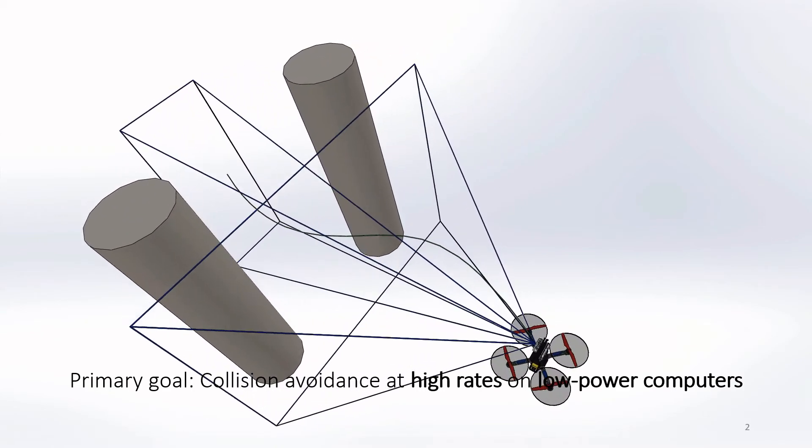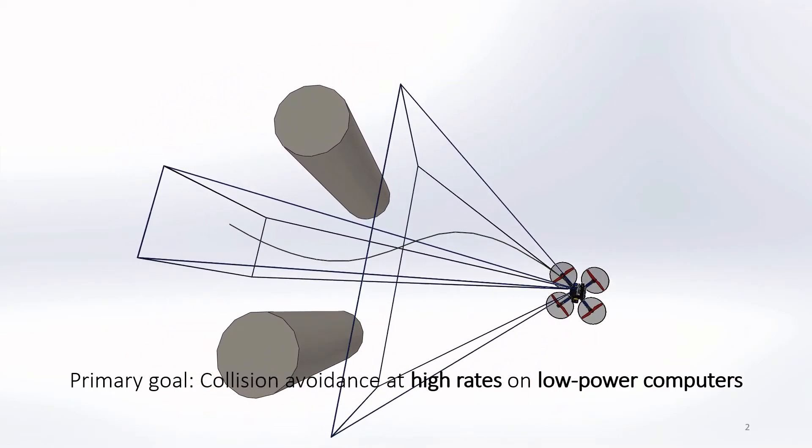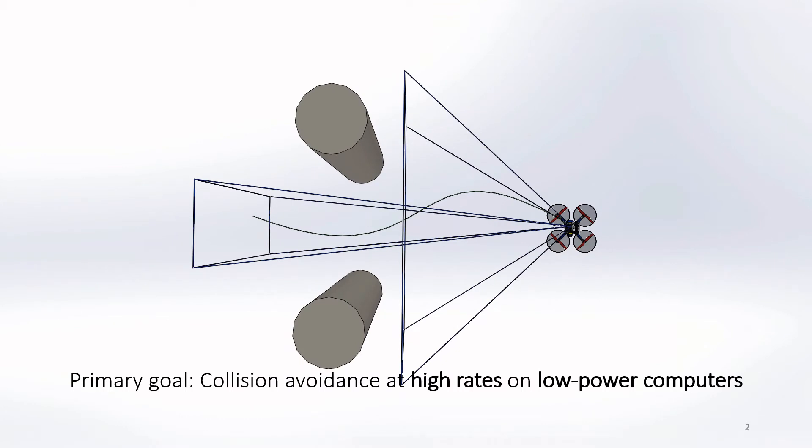We then use some favorable properties of the trajectory and those pyramids to perform very fast collision checking. If there's one thing to remember from this presentation, it's this idea of splitting your environment into these much simpler geometric representations in order to do rapid collision checking.